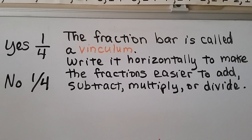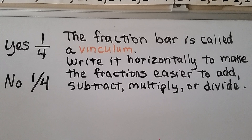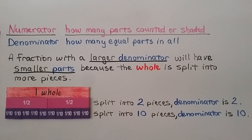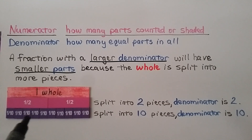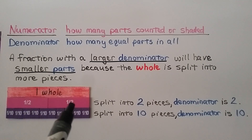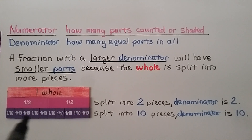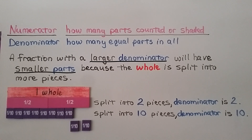To make your math life easier, try to remember to write the vinculum going straight across horizontally. The numerator tells us how many parts are counted or shaded; the denominator tells us how many equal parts there are in all. A fraction with a larger denominator will have smaller parts because the whole is split into more pieces. For example, a half has denominator two, but tenths have denominator ten — each tenth piece is much smaller in length than the half pieces.